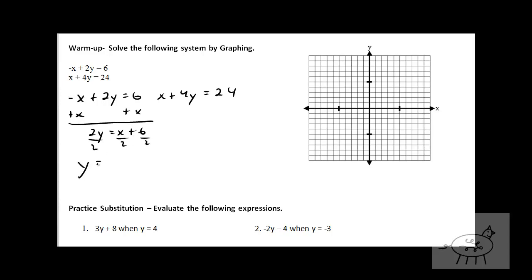So y equals — remember, x over two is the same thing as one half x. I think it's easier if you write it that way because then when you do rise over run, you see a fraction in front as opposed to x over two. You've got to remember there's a one there. So y equals one half x plus three.